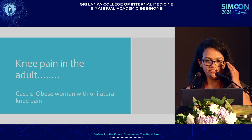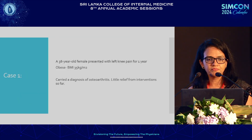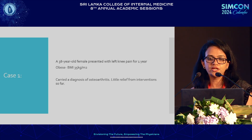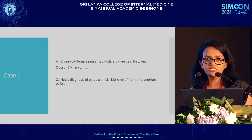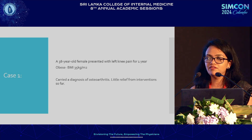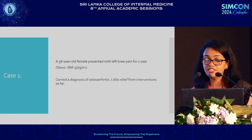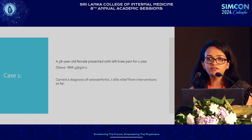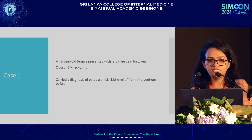We'll start with the first patient, who was an obese woman with unilateral knee pain. She was a 38-year-old female, presented with left knee pain progressively worsening over about one year. She was very obese, with a BMI of 35 kg/m². She lived in a three-story house in Kandy, had three kids, and was a housewife, meaning she was climbing up and down stairs all the time. With this BMI, the obvious diagnosis was osteoarthritis, as which she had been treated. However, there had been little relief from the interventions up until this point.